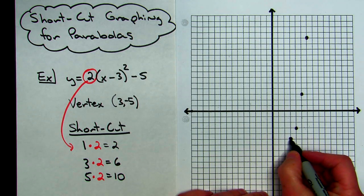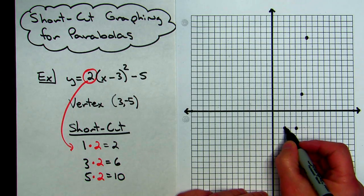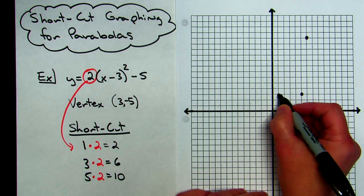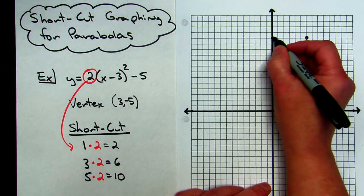Because I know the parabola is symmetrical, then all I've got to do is go 1 to the left, and up 2, and there's a symmetrical point, over 1 more, up even with my other point, which was up 6, and then over to the left, and up 10, symmetrical to that.